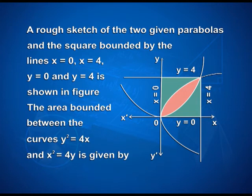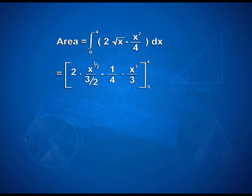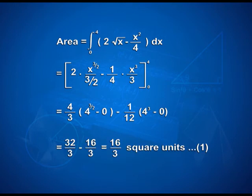The area bounded between curves y² = 4x and x² = 4y is given by integral from 0 to 4 of (2√x - x²/4) dx. That equals [2 · x^(3/2)/(3/2) - (1/4) · x³/3] from 0 to 4, giving (4/3)(4^(3/2)) - (1/12)(4³) = 32/3 - 16/3 = 16/3 square units.